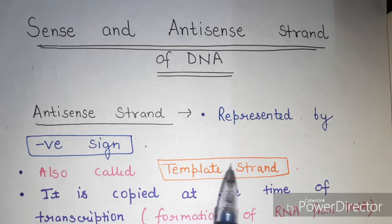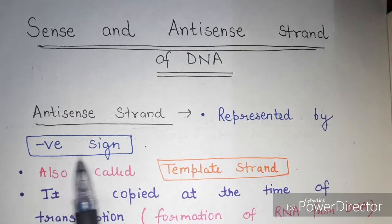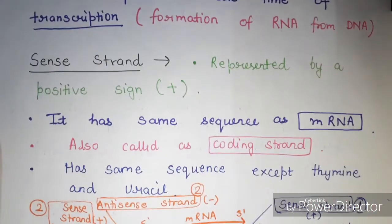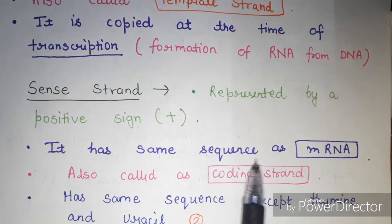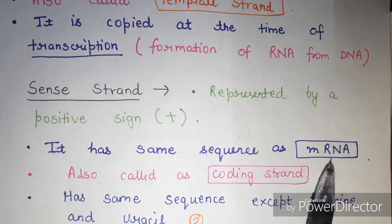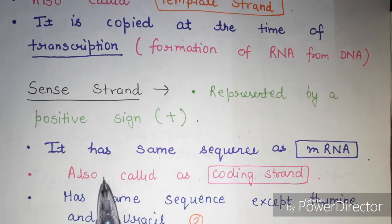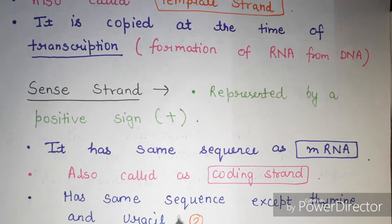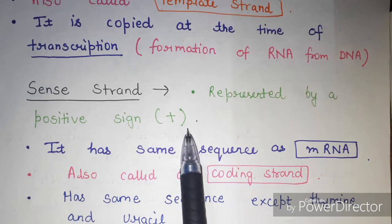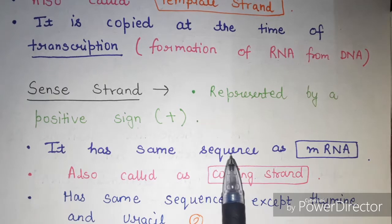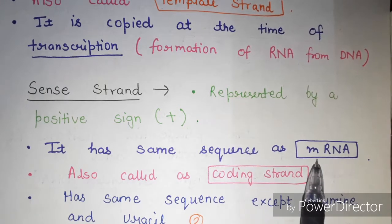The antisense strand is the template strand, represented by a negative sign. The sense strand, however, is represented by a positive sign. It has the same sequence as the mRNA, except that DNA has thymine where mRNA has uracil. The sense strand is also called the coding strand, and its sequence is the same as the mRNA sequence.